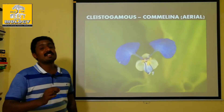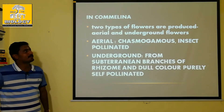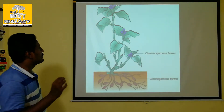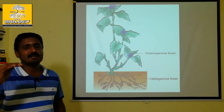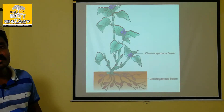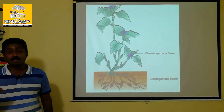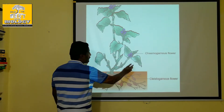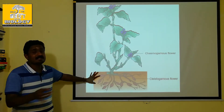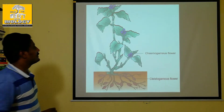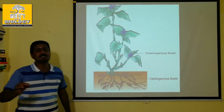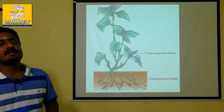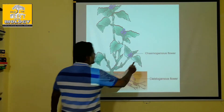For cleistogamous flowers, one example is Commelina. In the Commelina plant, there are two types of flowers: aerial flowers, which are open flowers found above ground, and underground flowers found on subterranean branches (rhizome). There are flowers found underground as well.